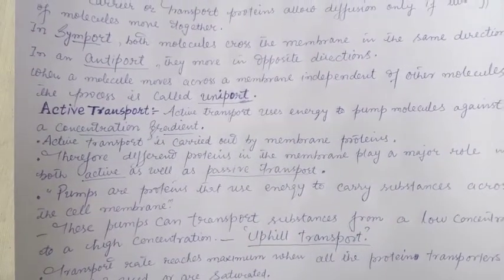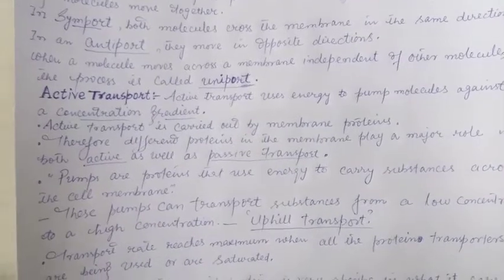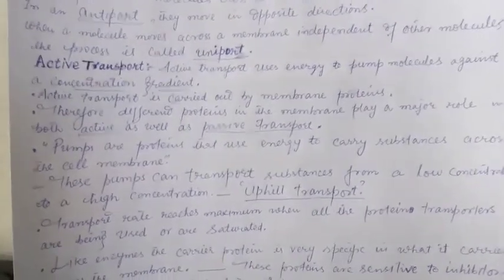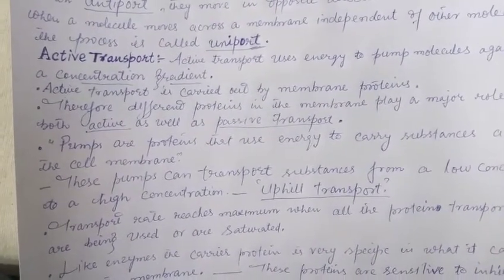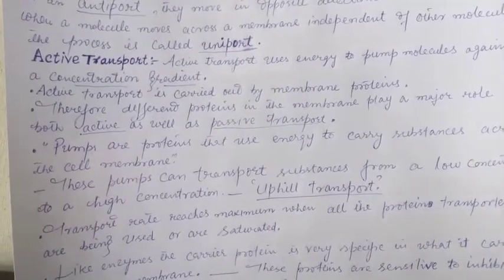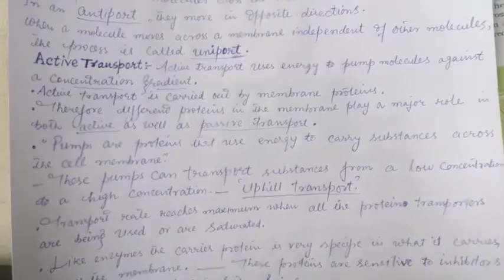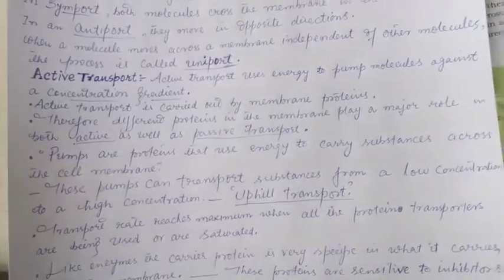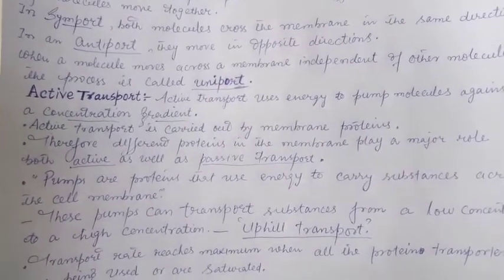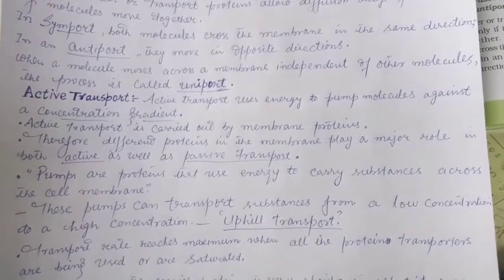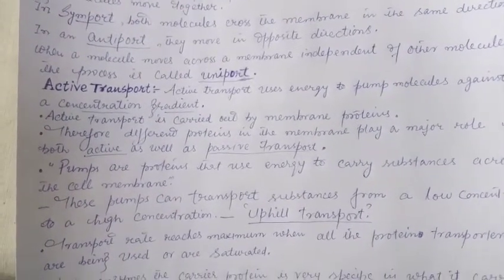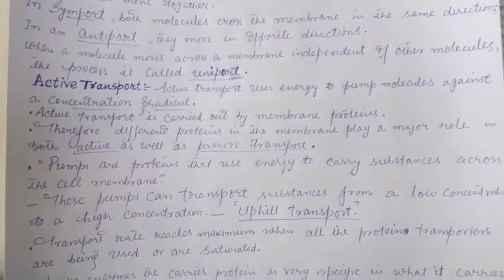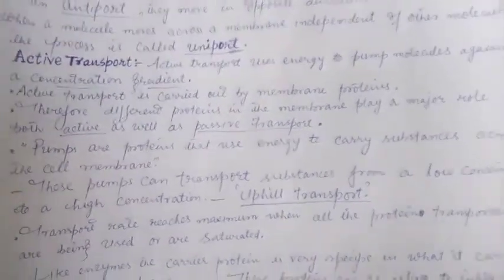Different proteins in the membrane play a major role in both active and passive transport. Pumps are proteins that use energy to carry substances across the cell membrane, transporting them from low concentration to high concentration. This is called uphill transport, since it works against the concentration gradient.